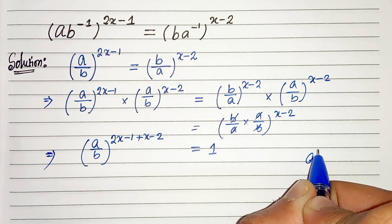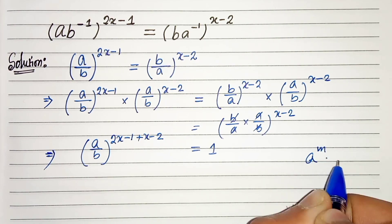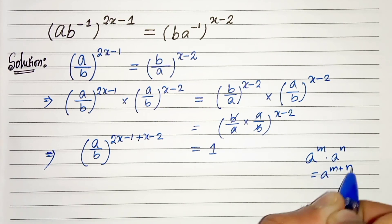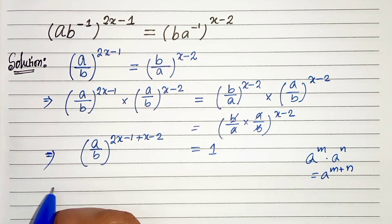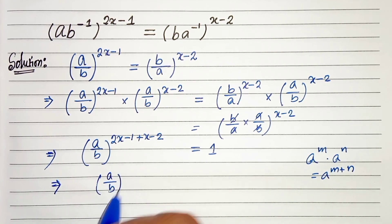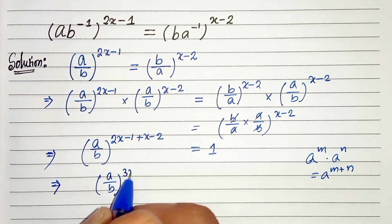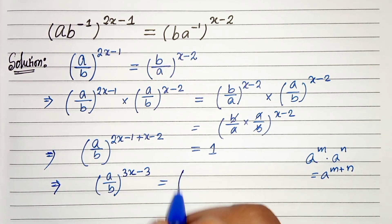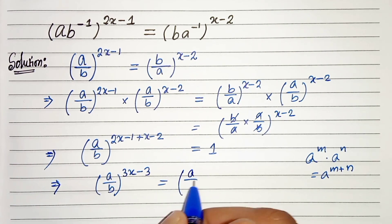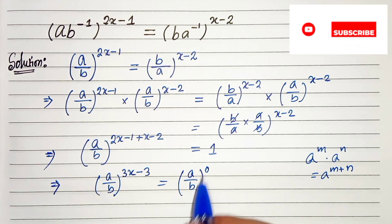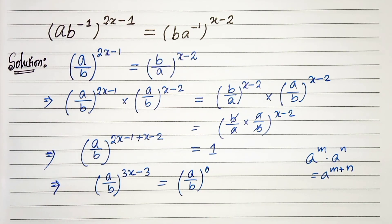Since we know that aᵐ times aⁿ equals a^(m+n), in the next step we can write (a/b)^(3x-3), because 2x+x=3x and -1-2=-3. And 1 can be written as (a/b)^0, since anything to the power 0 is 1.